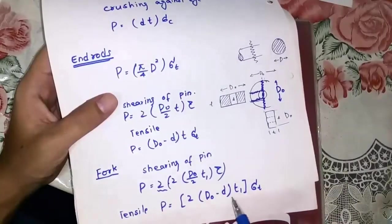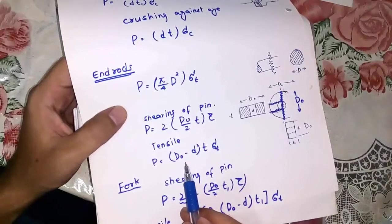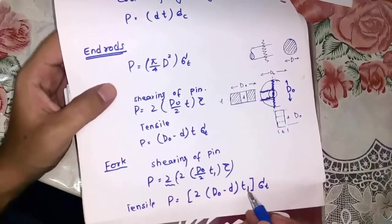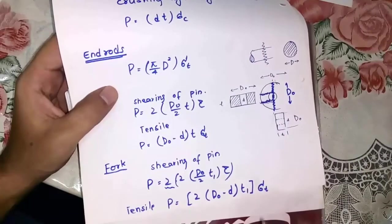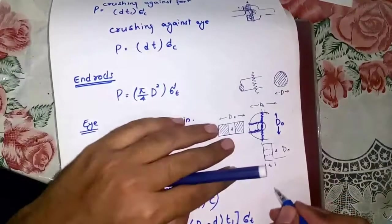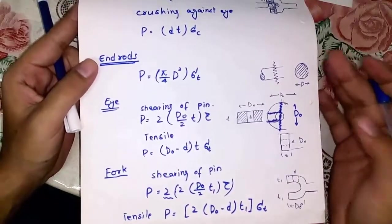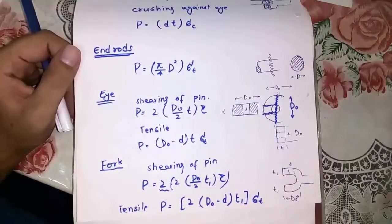Next is tensile failure. This failure has same formula as the tensile failure of eye, but here we would use t1 instead of t. 2 is for the two legs of the fork. These are the failures of knuckle joint. If you find this video helpful, subscribe the channel for more.